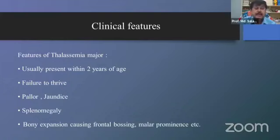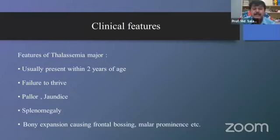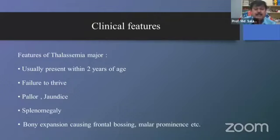Features of thalassemia major: patients usually present within two years of age. They develop severe anemia — some patients develop anemia as early as six months. There is failure to thrive, pallor, and the spleen becomes enlarged. Bony expansion causes frontal bossing and malar prominence. Facial expression is changed, and the characteristic 'thalassemia face' develops.